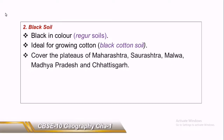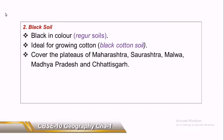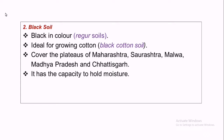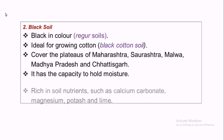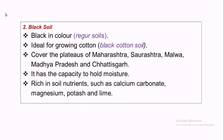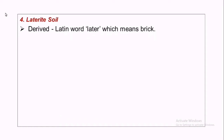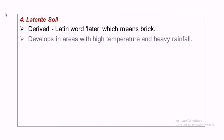Black soil covers patches of Maharashtra, Saurashtra, Malwa, and Madhya Pradesh. It has the capacity to hold moisture and is rich in soil nutrients such as calcium carbonate, magnesium, potassium, and lime. The next type is laterite soil, derived from the Latin word 'later,' meaning brick, and it develops in areas with high temperature and heavy rainfall.